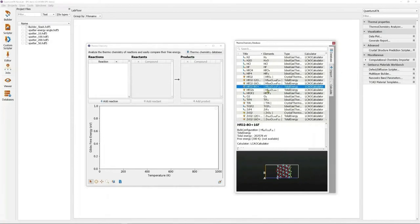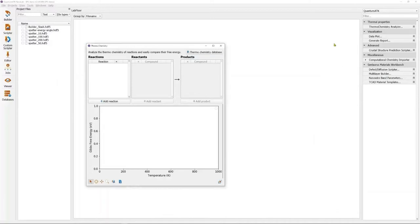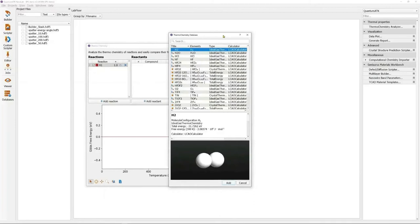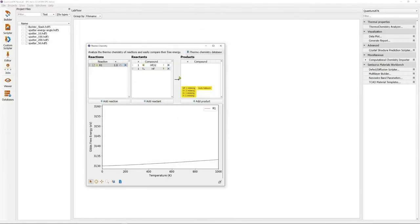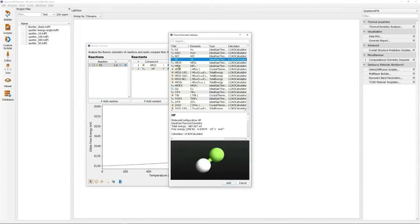Now let's try to compute a reaction. So we press this add reaction button and give it a name, R1. Now we will add reactant molecules from the thermochemistry database. So hafnia bulk and HF gas, and as products, hafnium fluoride and water.